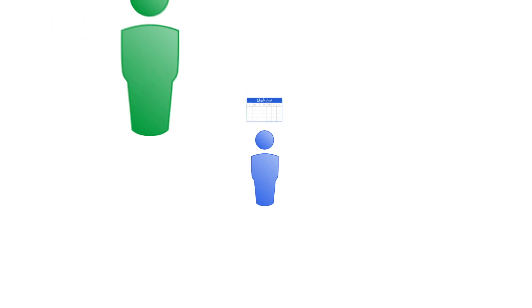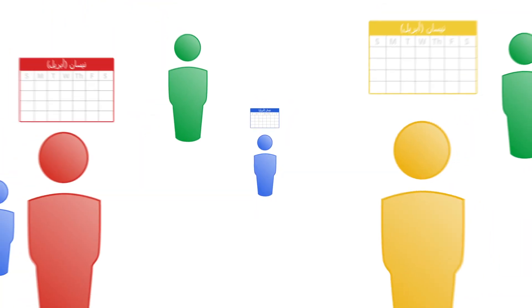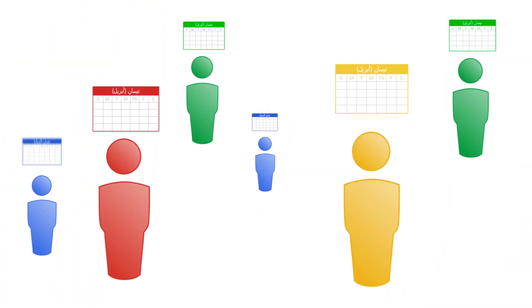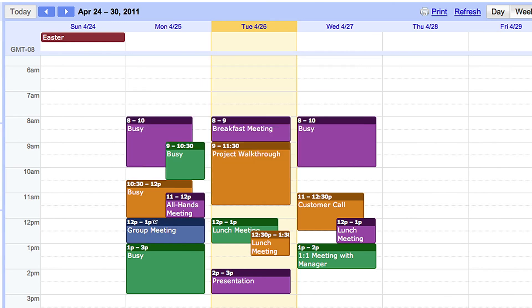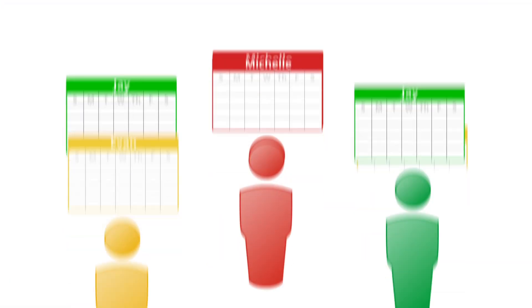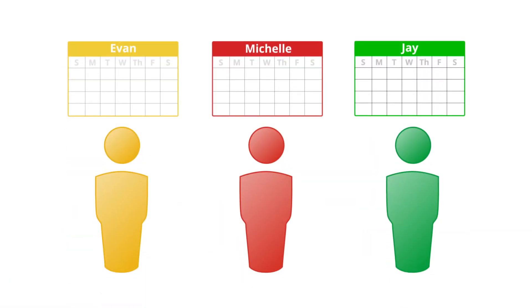Scheduling a meeting with more than a few people can often be time consuming. With Google Calendar, you can easily overlay and view your colleagues' calendars to quickly find time that works for everyone. It lets your employees focus on the content of a meeting rather than the actual setup.